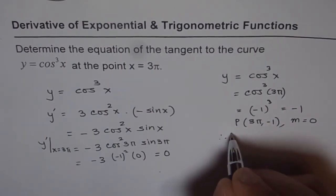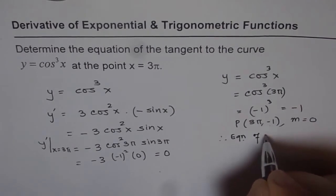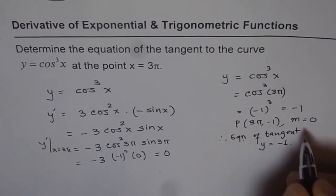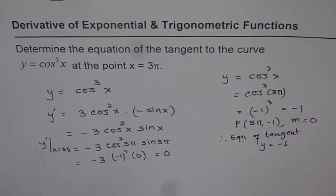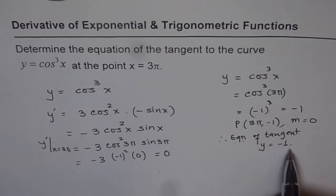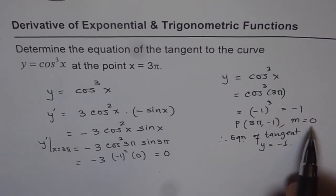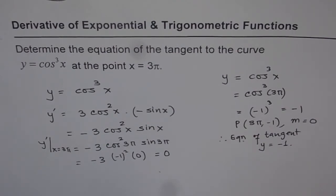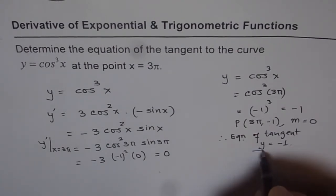Therefore, the equation of the tangent is y = -1. Since the slope is 0, the equation is simply y equals the y value, which is -1. It is a horizontal line with slope 0 going through the point (3π, -1). The equation is y = -1, and that is our answer.